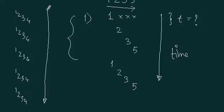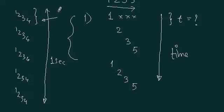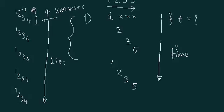Correct? Now, what is this time period? 1 second. So, 1 fifth of this is given for 1 set. What is that? 1 fifth of 1 second — how many milliseconds? 200 milliseconds. And how much time for 1 digit? 40 milliseconds... or 50 milliseconds? 50 milliseconds.